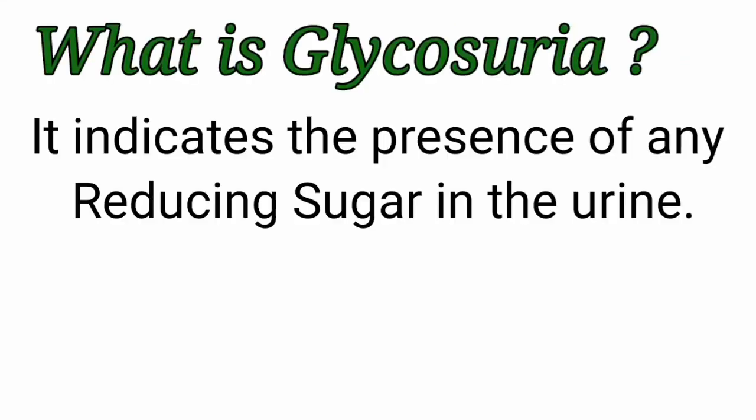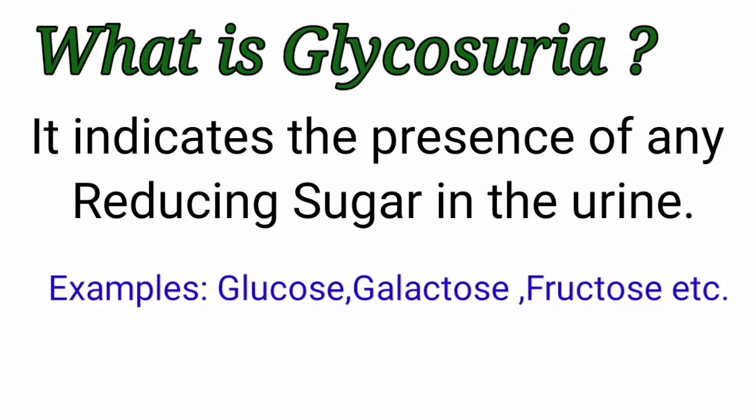What is Glycosuria? Glycosuria indicates the presence of reducing sugar in the urine. This sugar may be any sugar, for example glucose, galactose, or fructose.